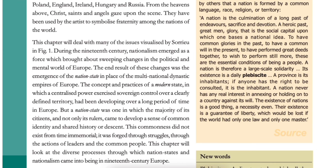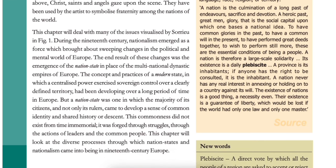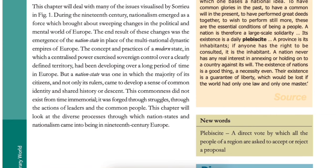This chapter would deal with many of the issues visualized by Sauriau in Figure 1. During the 19th century, nationalism emerged as a force which brought about sweeping changes in the political and mental world of Europe. The end result was the emergence of the nation-state in place of the multinational dynastic empires of Europe. A nation-state was one in which the majority of its citizens came to develop a sense of common identity and shared history or descent. This commonness was forged through struggles and through the actions of leaders and the common people.